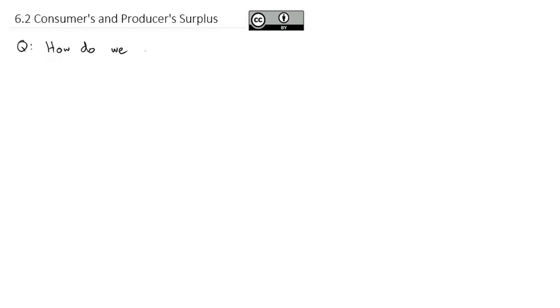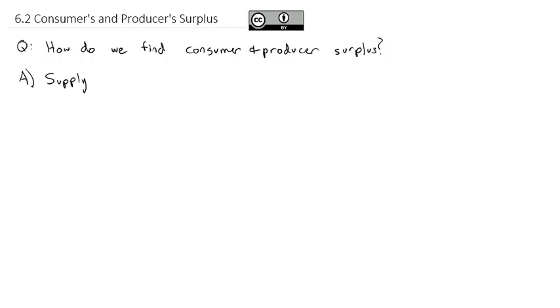Now that we've taken a look at some of the applications of the derivative in business and economics, we're going to transition to applications of the anti-derivative, or the integral, in business and economics. In this video, we're going to answer the question: how do we find consumer and producer surplus? We'll look at this idea of supply and demand from a mathematician, not an economist.